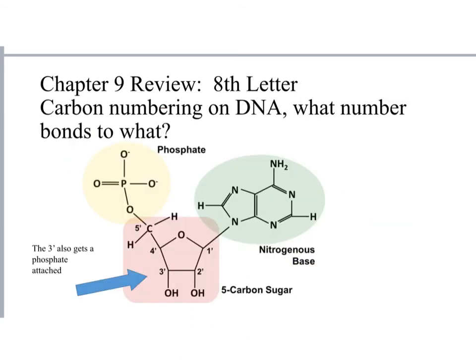Know how to number the sugar in a nucleotide and what is bonded to each carbon. Carbon 1 is always bonded to the nitrogen base (A, C, T, or G). Carbon 2 is not bonded to anything significant. Carbons 3 and 5 are bonded to phosphates.